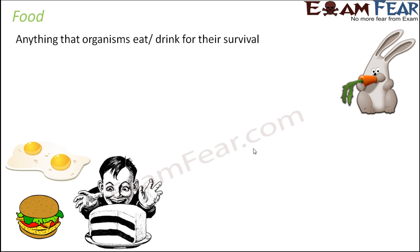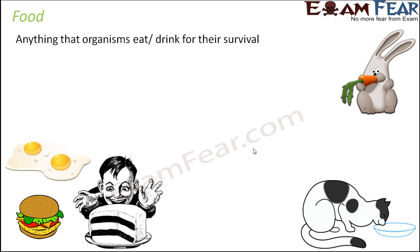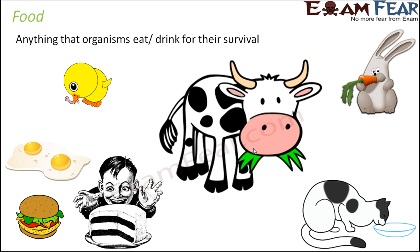Let's look at some organisms and what they eat. A rabbit commonly eats carrot, so we often see a rabbit with a carrot. A cat is very fond of milk, so it drinks milk. Birds have different food habits — some birds are very fond of seeds while others prefer tiny insects and worms. A cow mostly eats grass or plant leaves, feeding directly on plants. So different organisms have different food habits.